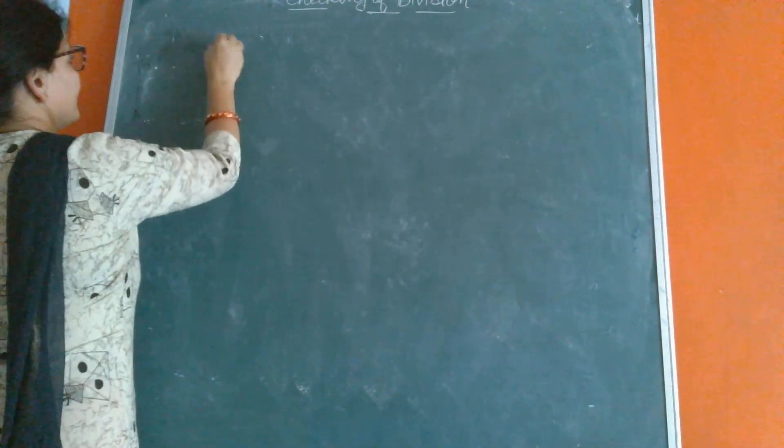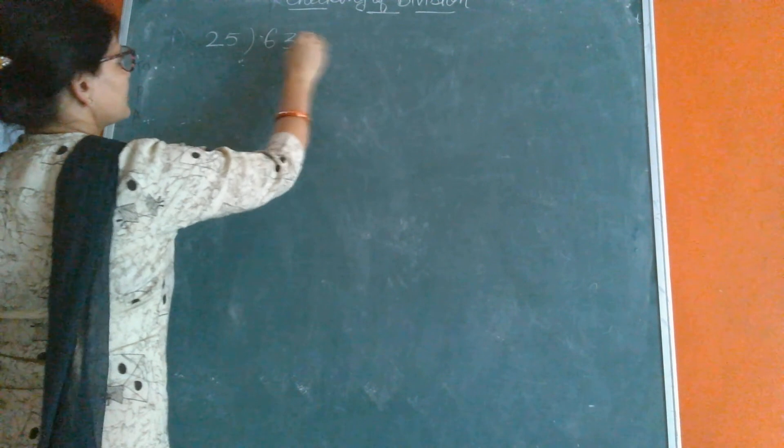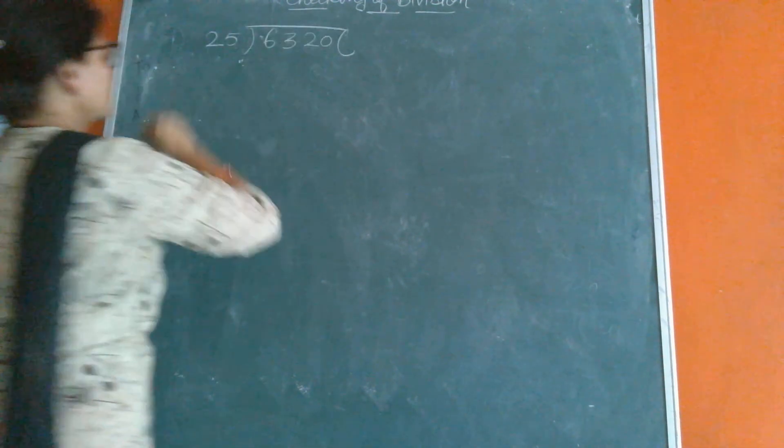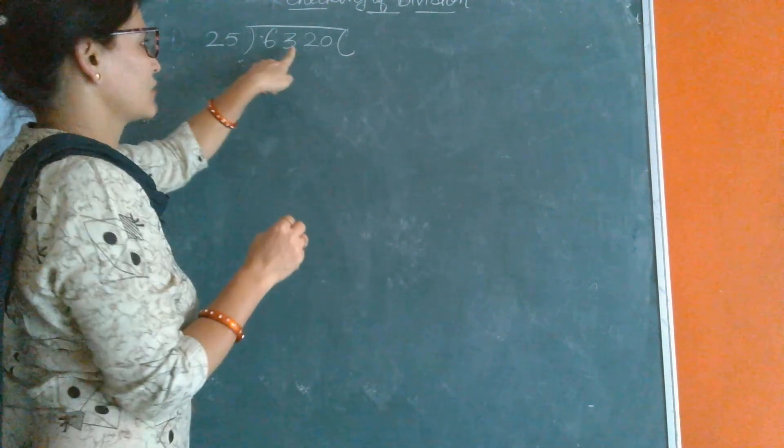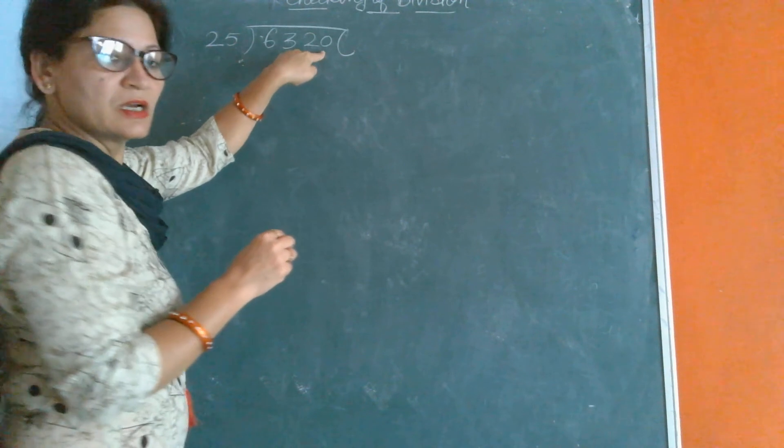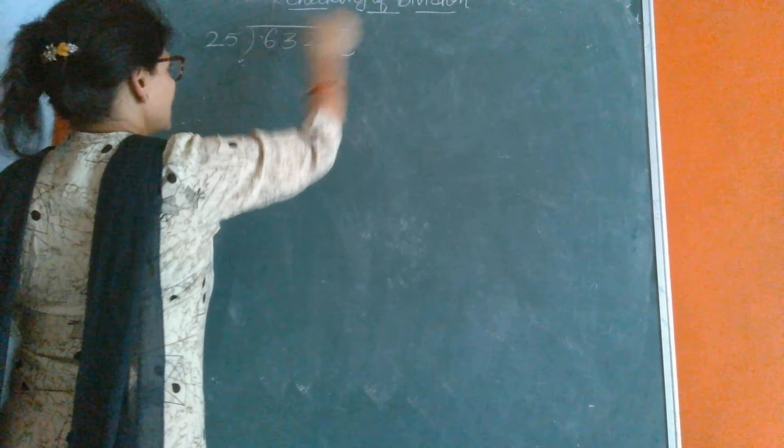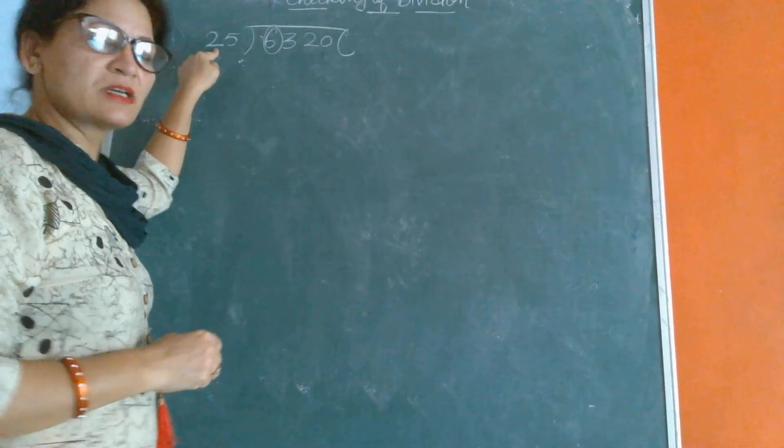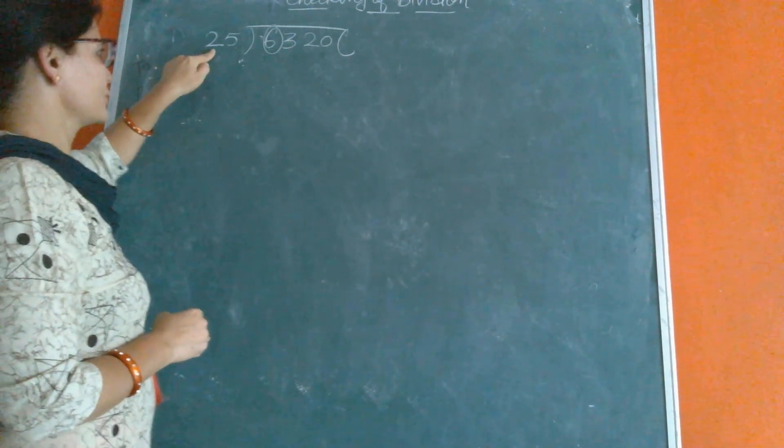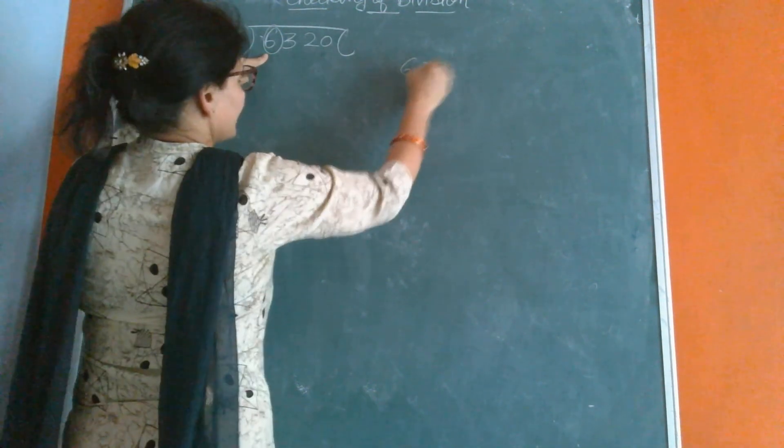Now, we have 25 and 6320. First, 25 is divisor and 6320 is dividend. Now start the division. First, we will take from the dividend numbers and the divisor number. Divisor number is 2 and dividend number is 6. So 6 is greater than 2.